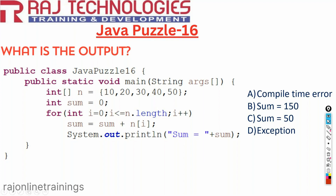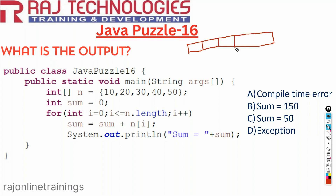Here we have taken an array. This array has values connected to array n, and the indexes are 0, 1, 2, 3, and 4. The values in this array are 10, 20, 30, 40, and 50. The initial value of sum is 0. First, i is 0.